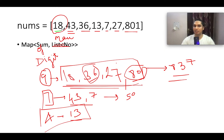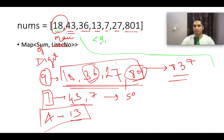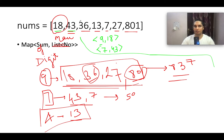The first element is 18, digit sum 9. There is no entry in the map for 9, so no answer exists yet; we add key 9 with value 18. Next is 43, digit sum 7 — no entry for 7, so we add key 7 with value 43. Next is 36, digit sum 9.